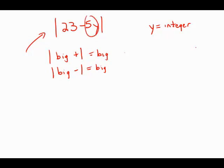So what I'm going to do is, since 5y is a multiple of 5, I'm going to pick the multiples of 5 that are closest to 23. The two multiples of 5 closest to 23 are 20 and 25.